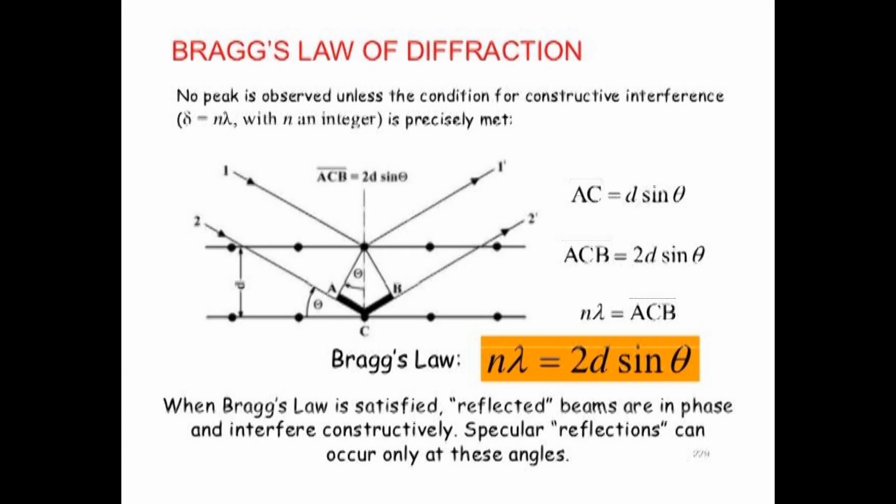The observer sees the superposition of all the waves coming out. Let's assume the lattice is separated by distance d and the incident X-ray angle is theta. The extra path the X-ray has to travel on the second array of lattice is d times sine theta. Since it has to come back out again, the extra path difference is actually 2 times d times sine theta.